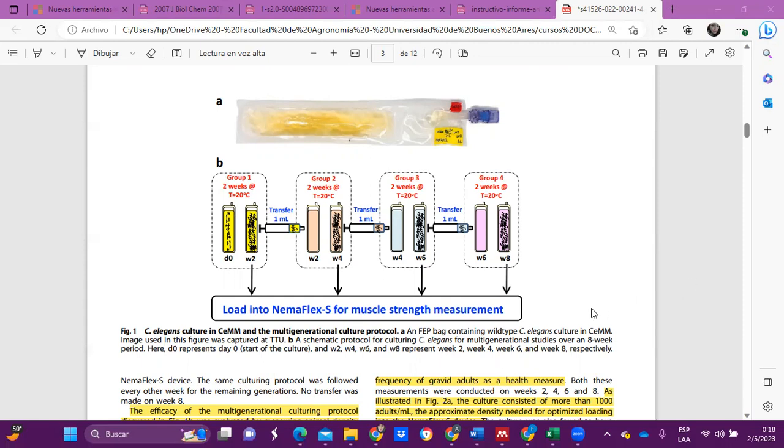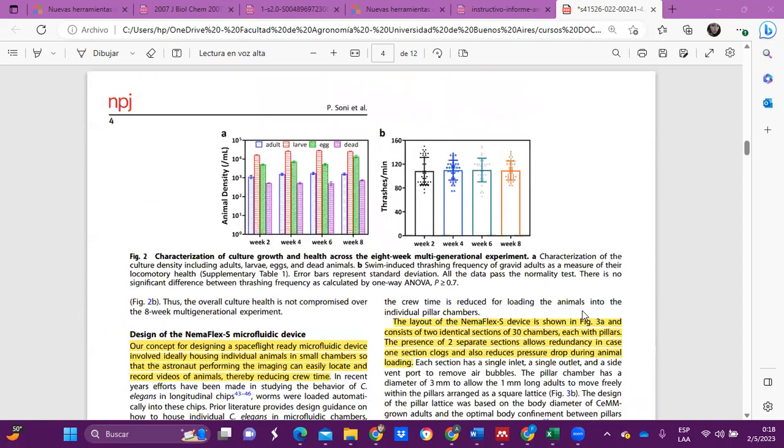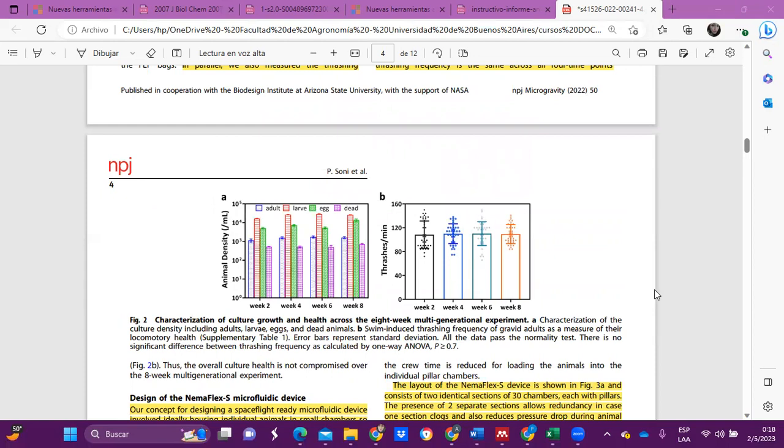In parallel, they also measured the thrashing frequency of gravid adults as a health measure. In this view, you can see the culture consists of more than 1,000 adults per milliliter, the approximate density needed for optimized loading within a NemaFlex device. The culture was also found to have several thousands of larvae and eggs, which shows good reproductive health and overall health of the animals in the culture. With regard to locomotory health, they found that the thrashing frequency is the same across all four time points. Thus, the overall culture health is not compromised over the eight weeks of generational experiments.